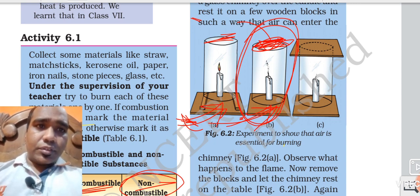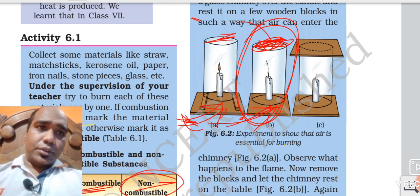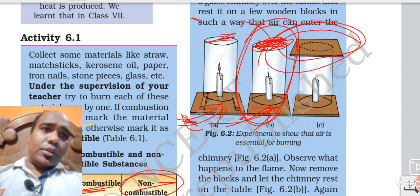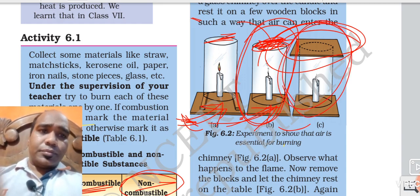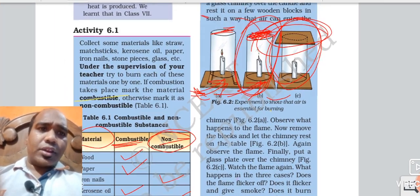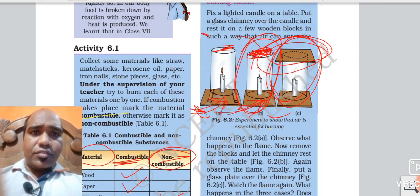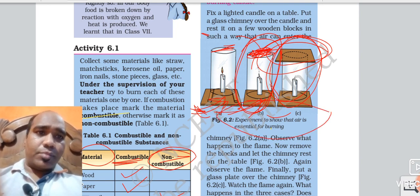Combustion will take place with the help of oxygen only. From the top, one wooden cardboard has been covered, so this candle is also not getting oxygen and is not burning. So this experiment you can write: air is essential for combustion - demonstrated with an experiment.